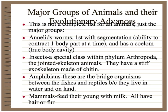Amphibians were chosen because they're the bridge between fishes and reptiles — they have adaptations for both living in water and living on land. And then there are the mammals. Mammals are important because we are mammals. Mammals feed their young with milk, and they all have hair or fur.